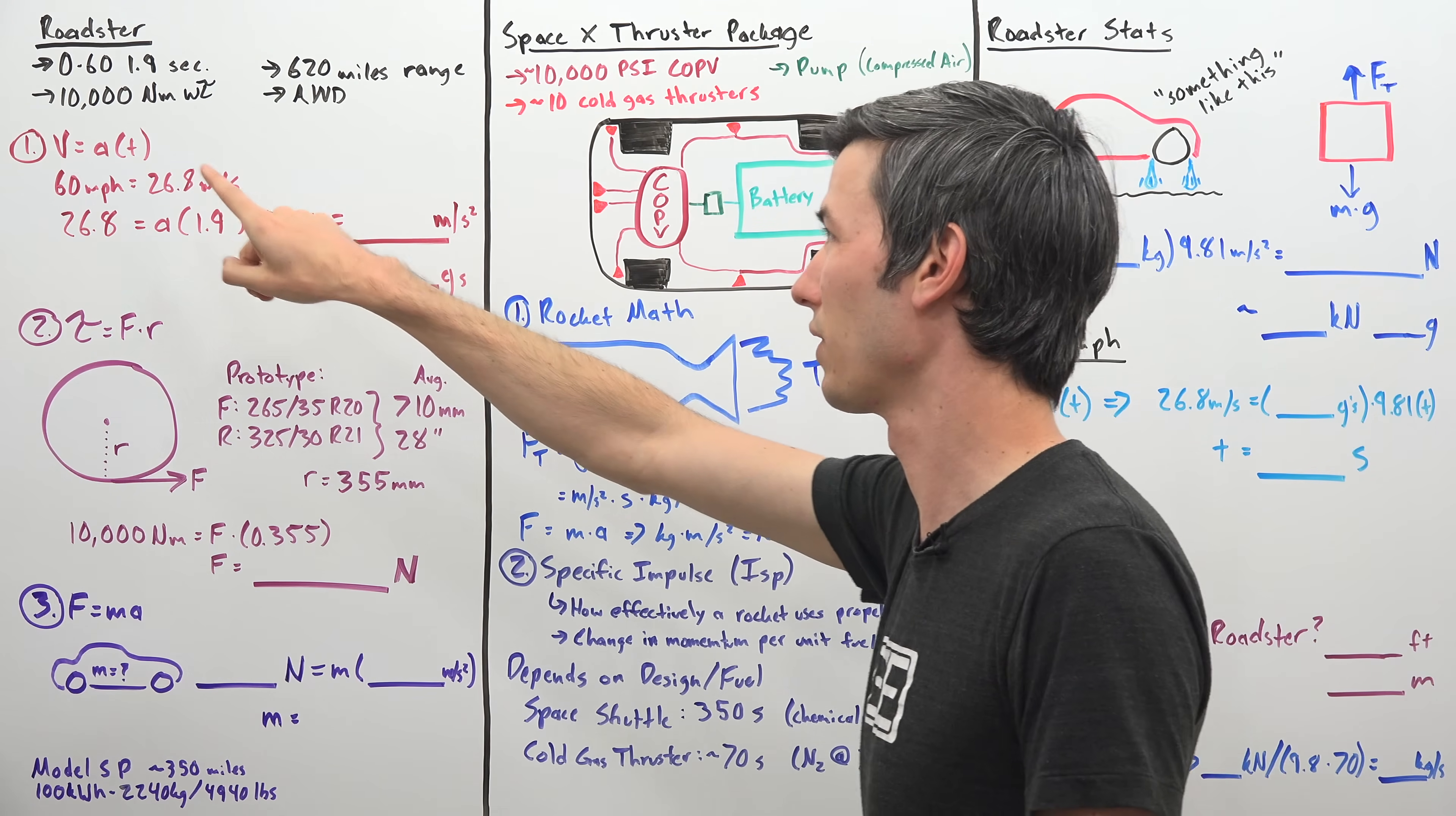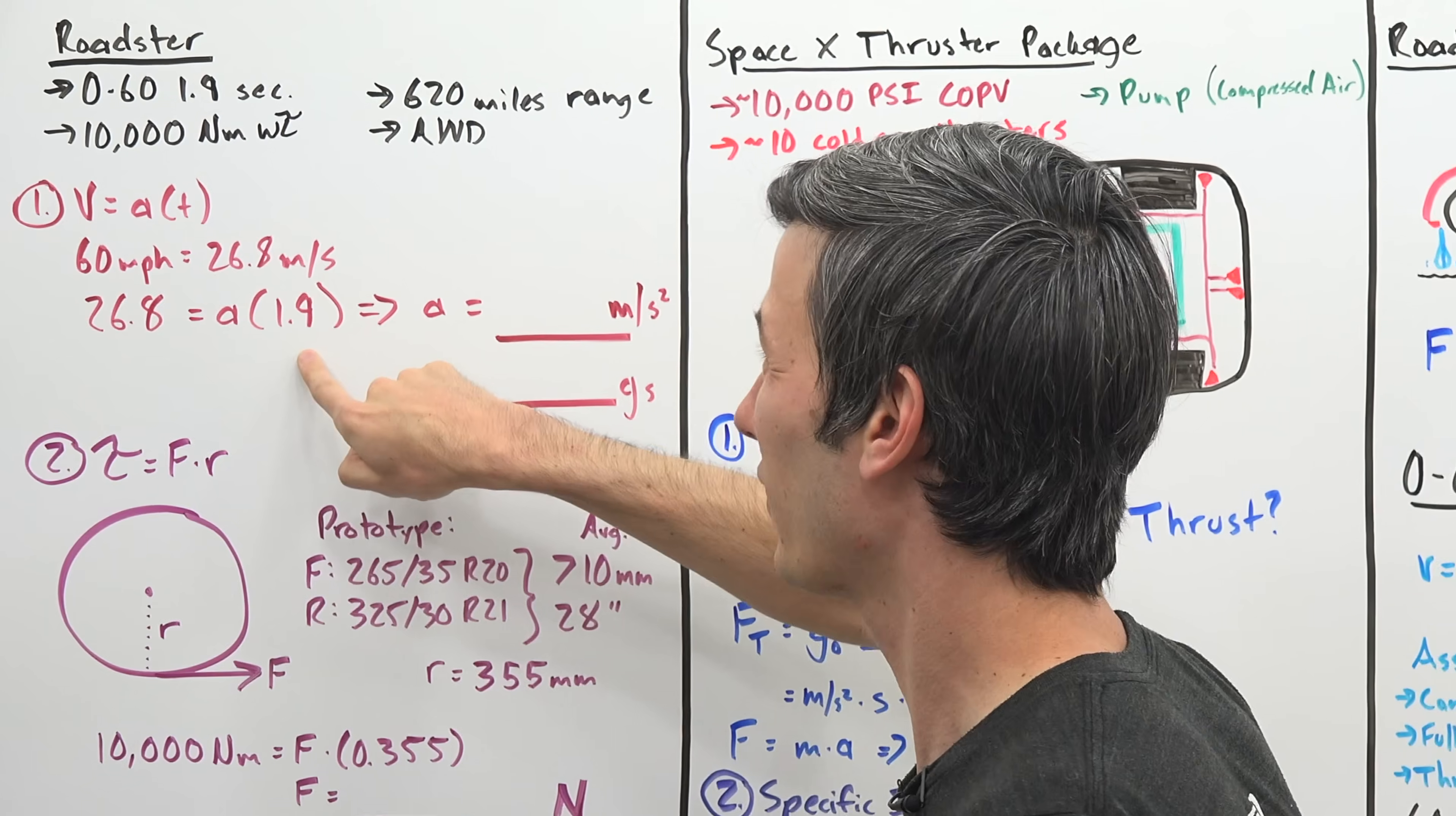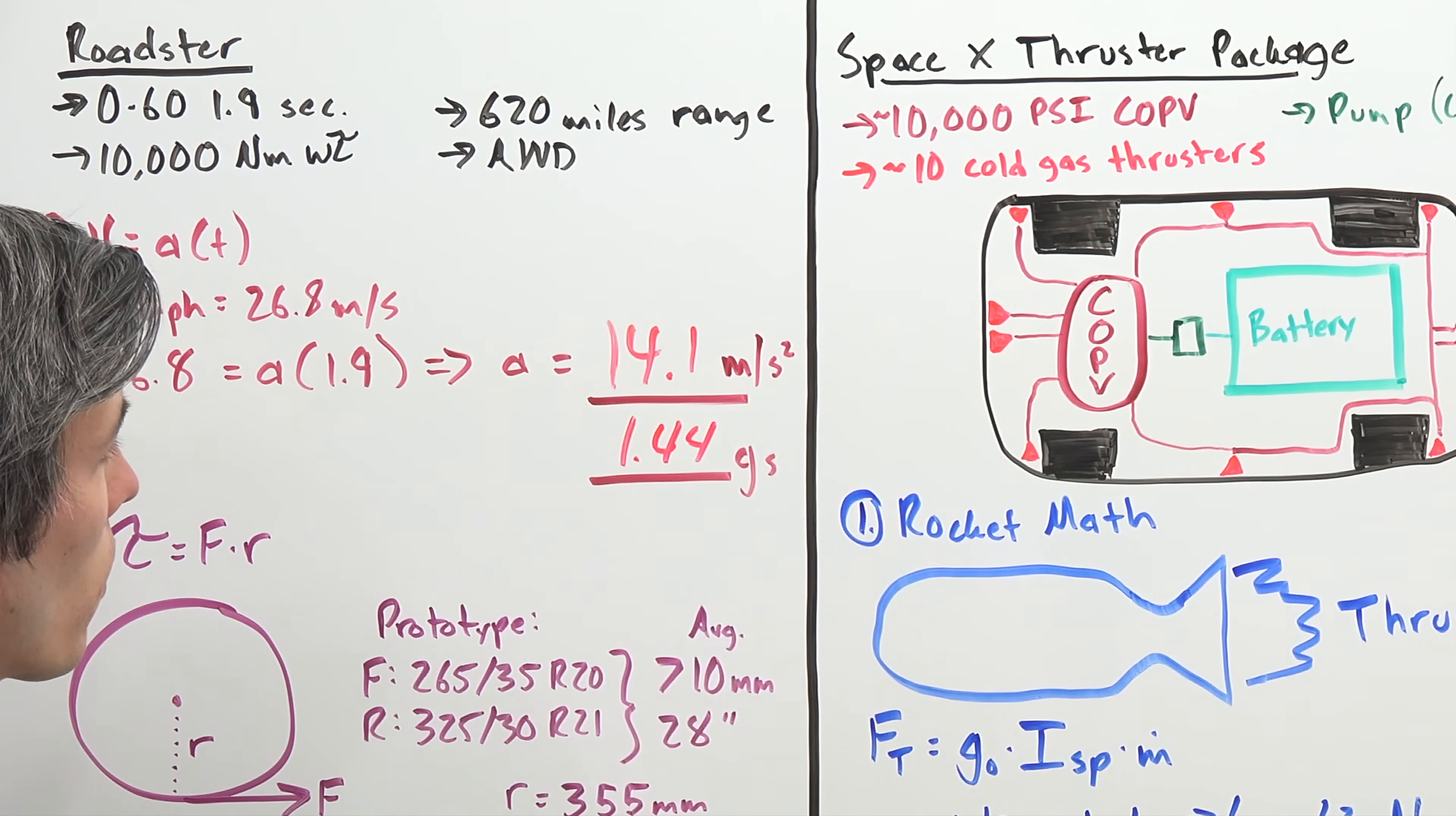So starting off with velocity equals acceleration times time. In this case, we're accelerating to 60 miles per hour in 1.9 seconds. 60 miles per hour is about 26.8 meters per second. So we're going to set 26.8 meters per second, that's our velocity, equal to our acceleration times time. It only takes us 1.9 seconds to get there, and that gives us 14.1 meters per second squared as our acceleration. Writing that in forms of G's, you simply take that 14.1, divide by 9.8, and you get 1.44 G's.